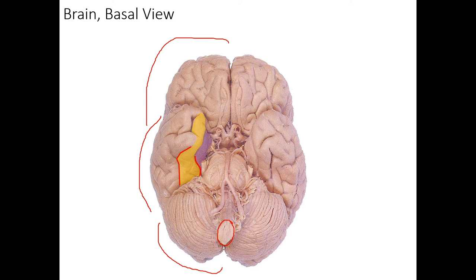Next, we have the parahippocampal gyrus, medial to the collateral sulcus. The medialmost portion of the parahippocampal gyrus is the uncus. The uncus contains part of the piriform cortex, which is responsible for our conscious sense of smell.